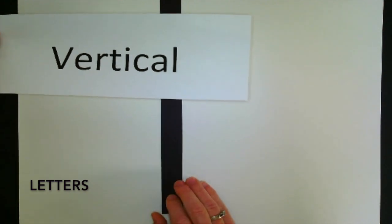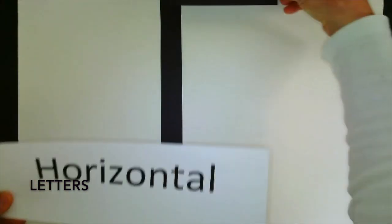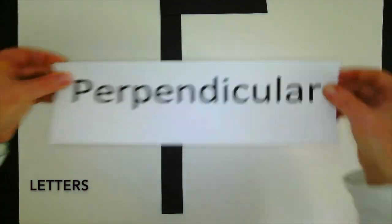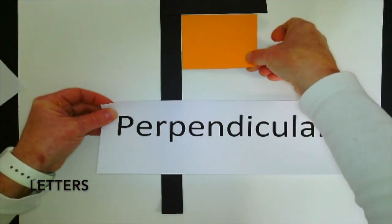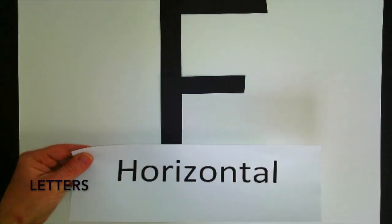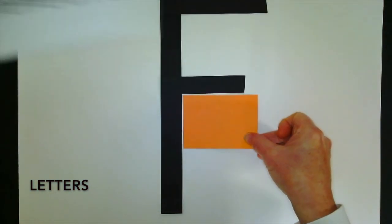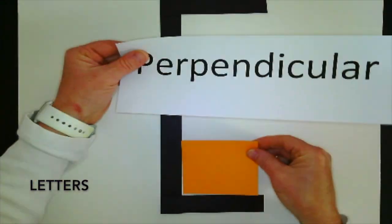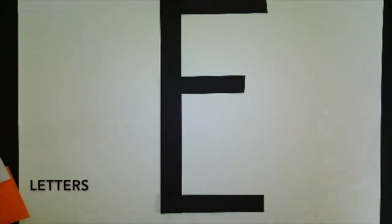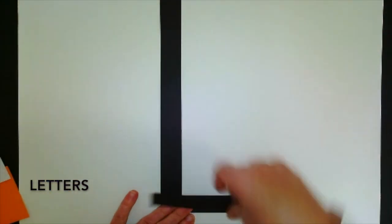Here we go. Another vertical line, and a horizontal line at the top which is perpendicular, and another horizontal line in the middle which is perpendicular, and another horizontal line at the bottom which is perpendicular. All three are parallel and I get the letter E.